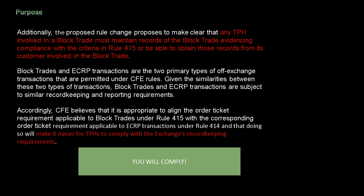Block trades and ECRP transactions are the two primary types of off-exchange transactions permitted under CFE rules. Given the similarities between these two transaction types, block trades and ECRP transactions are subject to similar record-keeping and reporting requirements. Accordingly, CFE believes it is appropriate to align the order ticket requirement applicable to block trades under Rule 415 with the corresponding order ticket requirement applicable to ECRP transactions under Rule 414.